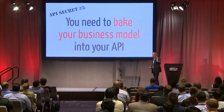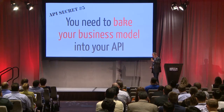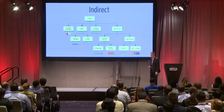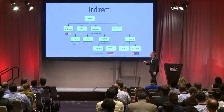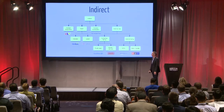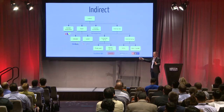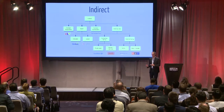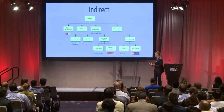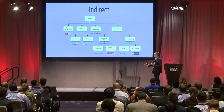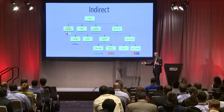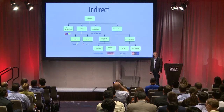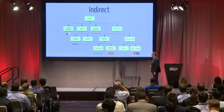Following the story from free, to developer pays, to developer gets paid, now we get to the indirect models. Going back to that diagram, this is actually the widest category — the biggest one — yet it's the one that gets talked about the least. In many ways it's probably the most important one. There are a couple related to content, a couple related to SaaS and the cloud, and then a smaller one about internal use — ways you can use your own API and get ROI for yourself internally.